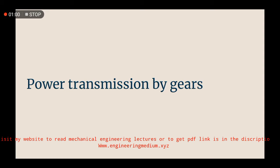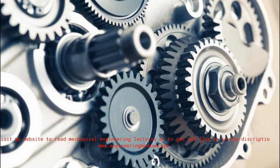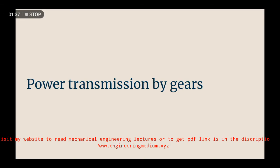First is power transmission by gear. Power transmission through gears is a very common method used everywhere in daily life. A gear is a circular plate which has teeth on its overall circumference. Gears are mounted on the shaft and they transmit power through their teeth. They are generally used for power transmission in small areas or nearby equipment. Applications include cars, engines, and tool room machines like lathe machines and other workshop machines.